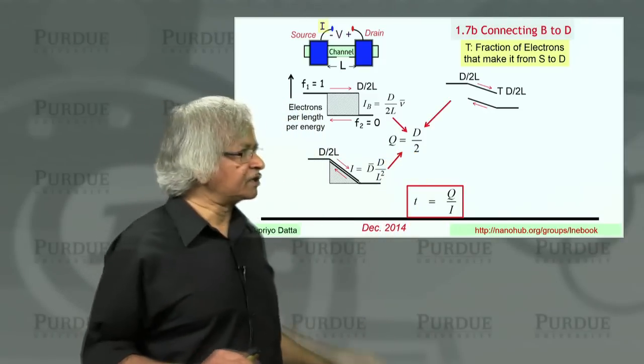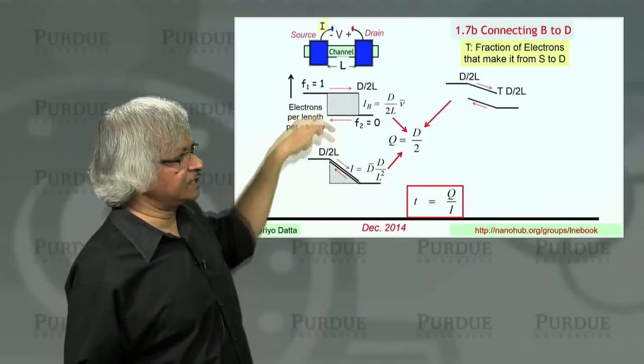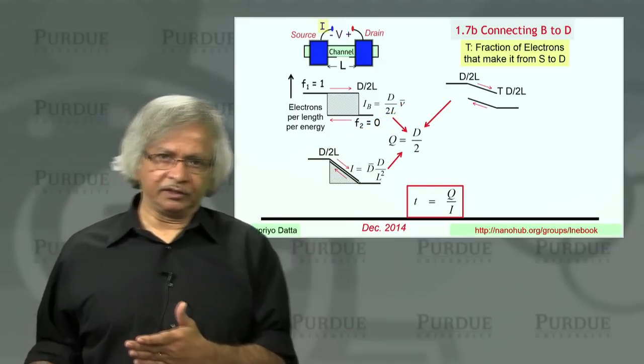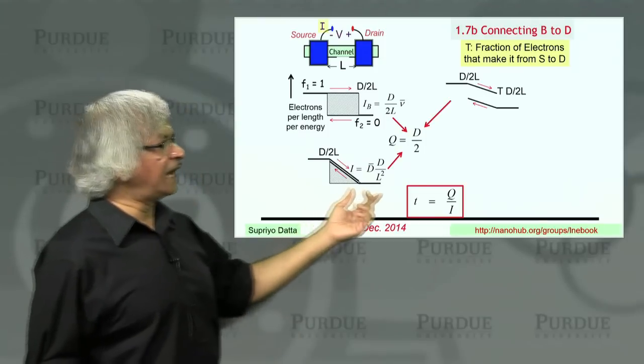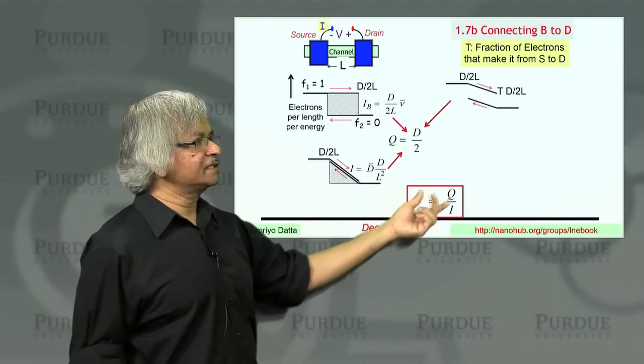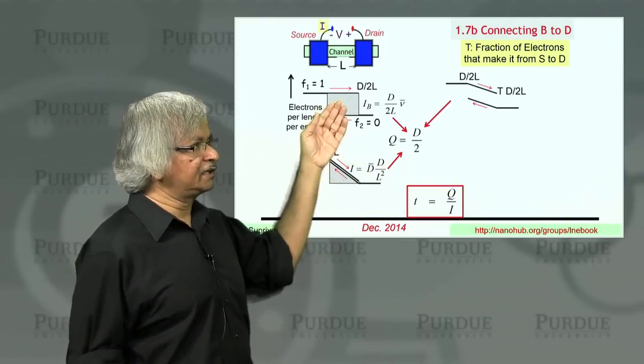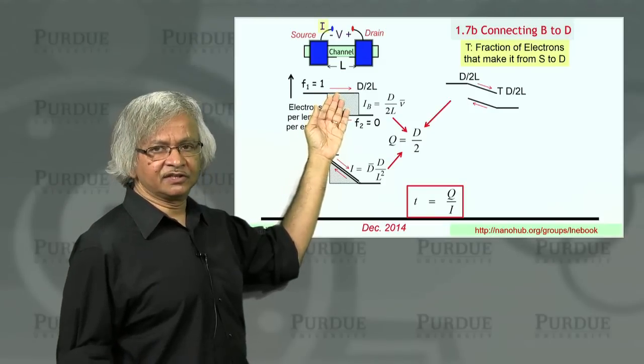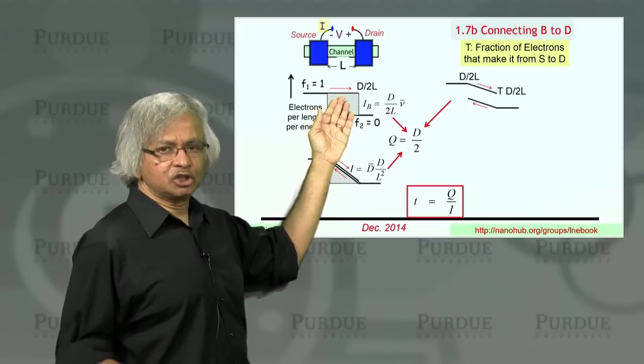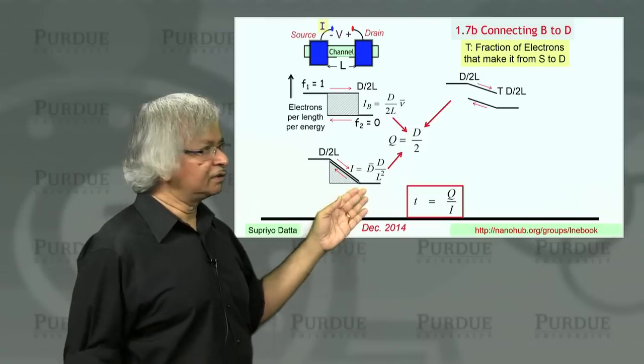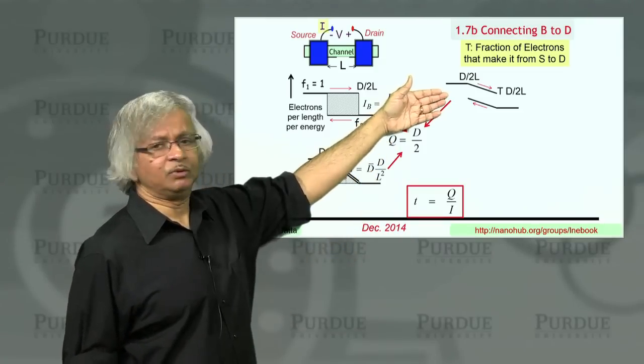What's different now, what's different in all three cases, is the current that is associated with it. The reason the times are all different is because the q's are all the same, but the currents are different. The current has the highest value in this case corresponding to the shortest time. Here, the current is relatively low, giving you a longer time, and this is in between.